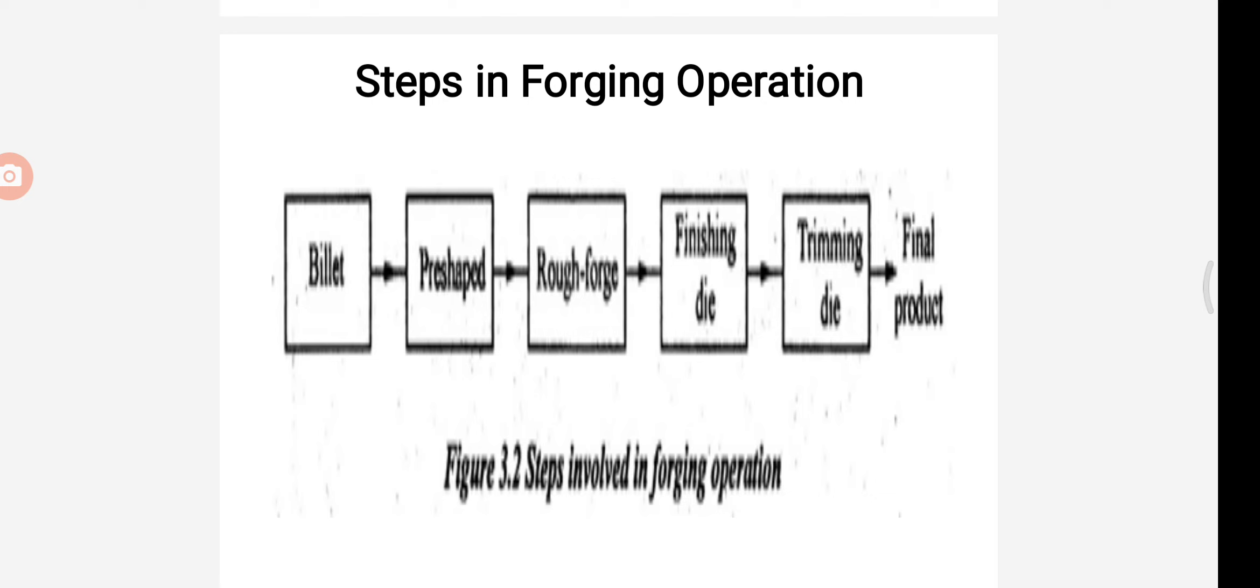Finally, the final shape is done by using the finishing die. Then the flash is trimmed off using trimming die. Final product is obtained by using finishing operations such as grinding, polishing. These are all steps involved in the operations. Here we can lay out diagrams, the process diagram, steps involved in forging operations: billet, pre-shape, rough forge, finishing die, trimming die and final product.